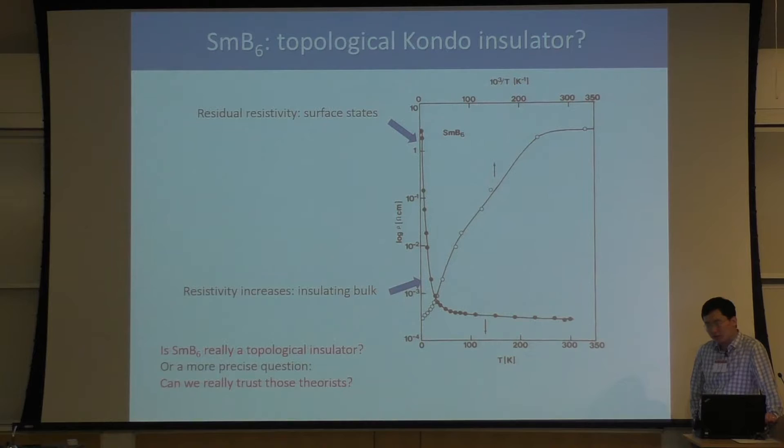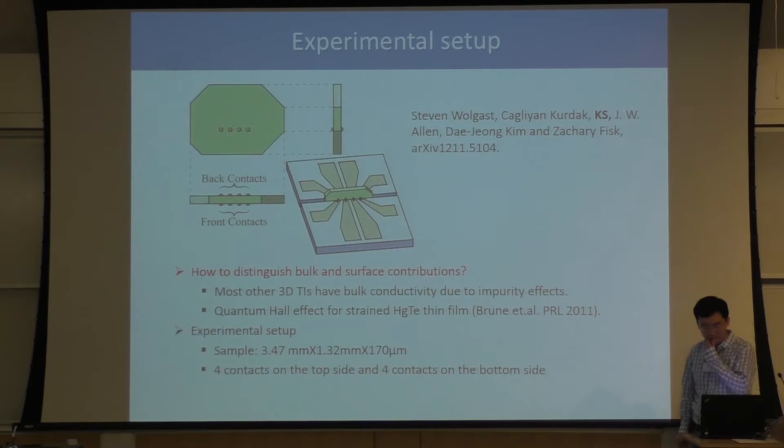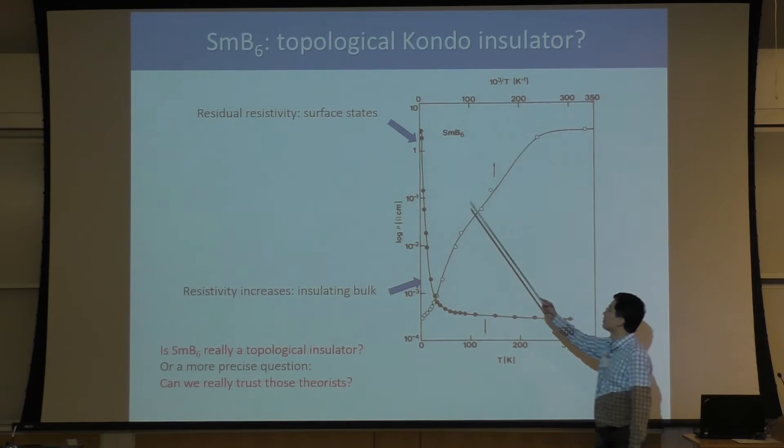But in terms of topology, the topology of this material — we don't need to know all the details. As long as we know the rough band structure and the qualitative behavior, we can determine the topology very accurately. That greatly enhances our prediction power. But that is not a proof, and it did not fully satisfy my colleagues, so they decided to test whether the idea is right or not.